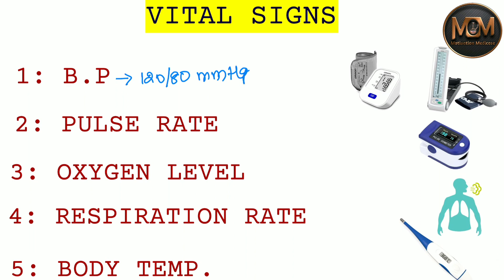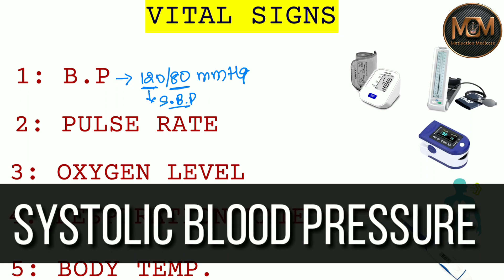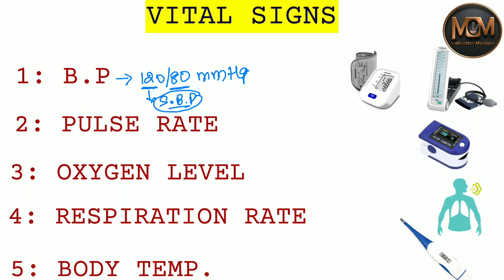Here we need to understand what is 120 and what is 80. So 120 is nothing but the systolic blood pressure. When our heart contracts, the BP rises and blood moves out along the vessels. At that time, the blood pushes and makes pressure over the wall of the vessels. That pressure is said to be the systolic blood pressure, and it should be 120.